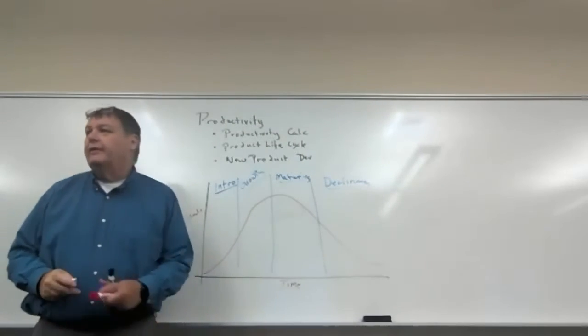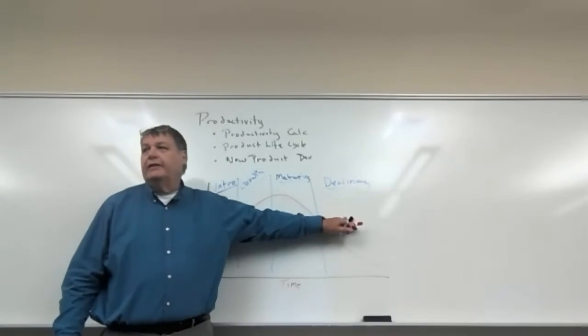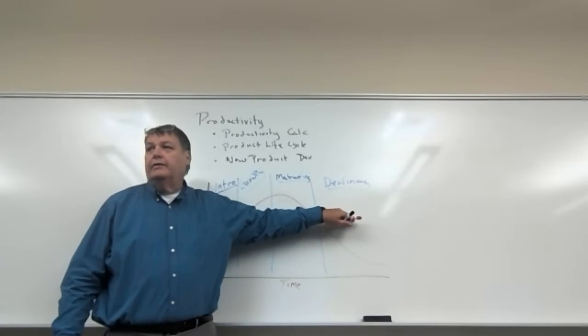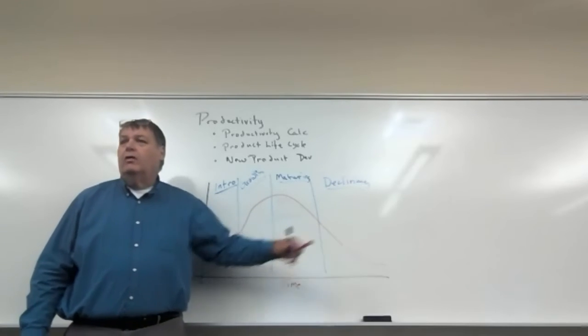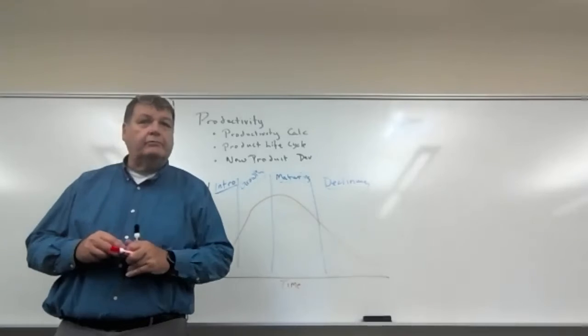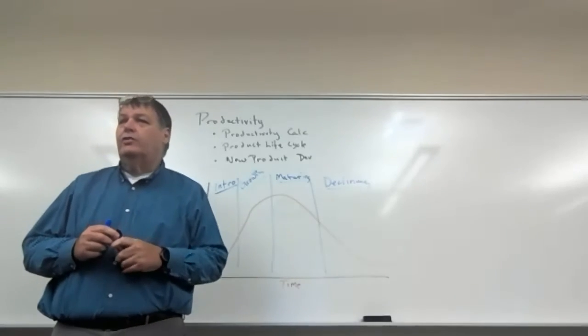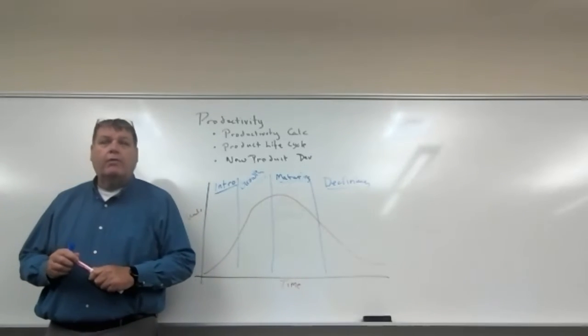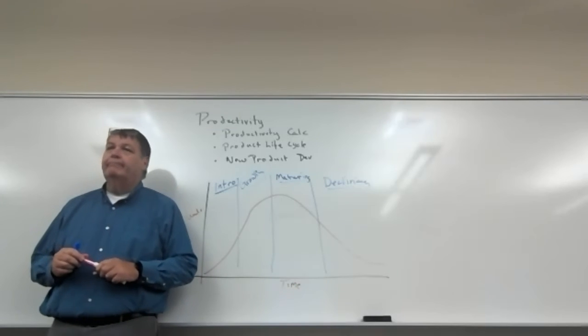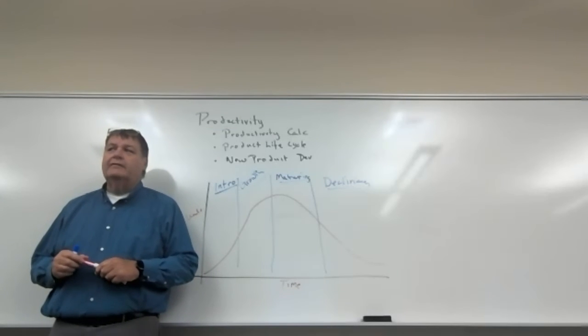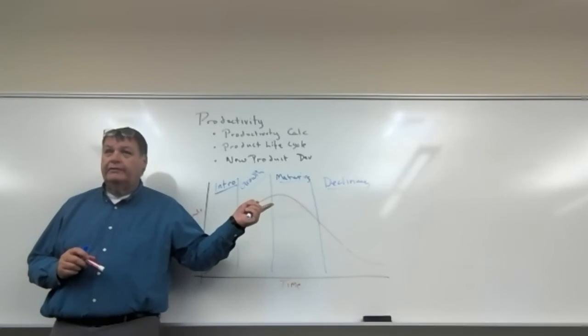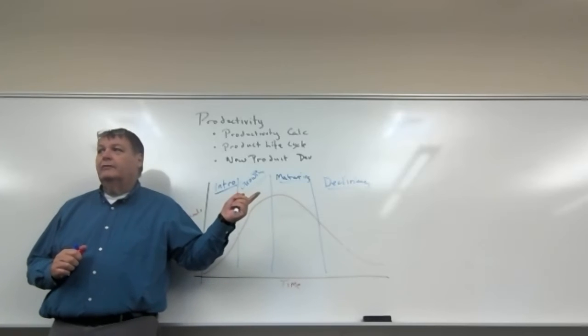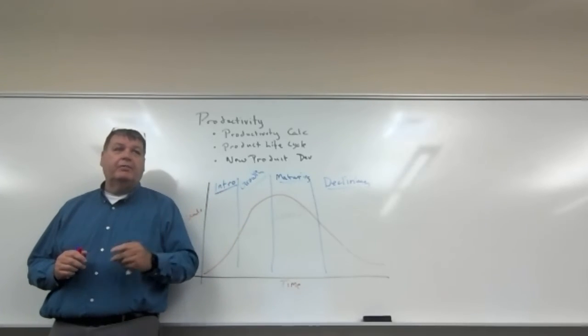And then there's the declining phase. Declining phase, productivity, you have all the advantages, productivity and supply, but customer demand is dropping off. There are lots of substitute products in the market. And that's driving down your profitability. Does that make sense? You're going to have to be able to discuss all these points on a test coming up in detail applied to a specific product line.